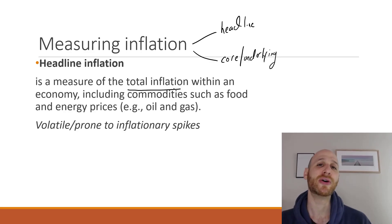The thing is though, that when we include everything in an economy, we might get sort of volatile or sort of one-off movements in prices, because we're just looking at all prices. So headline inflation is quite a volatile number, and it's prone to inflationary spikes or one-off inflationary movements.